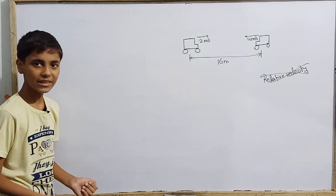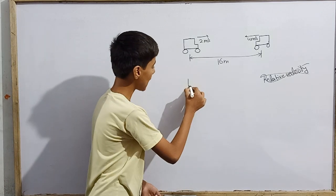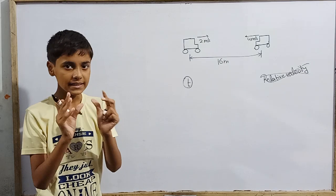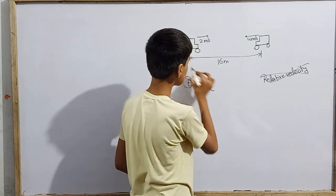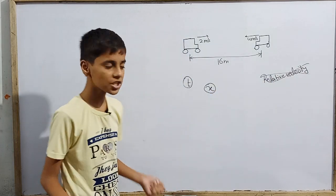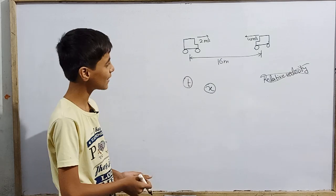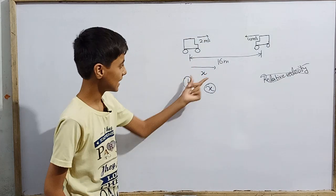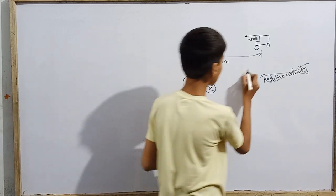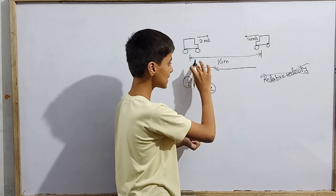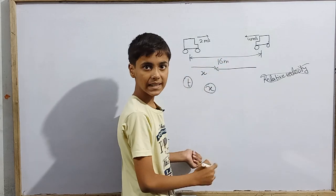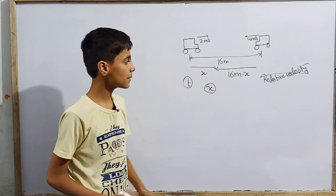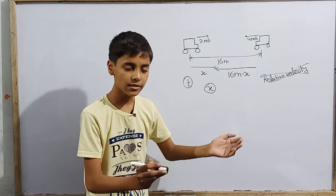What we shall try is we have to write these equations. Suppose that in T time, these two cars collide. Now when these two cars collide, there is one condition: x will be the same. Suppose this is along the x-axis, then the position will be the same for both cars. In T time, the first car has traveled x here, and the second car has traveled 16 meters minus x, which is greater because the second car's speed and hence velocity is higher.